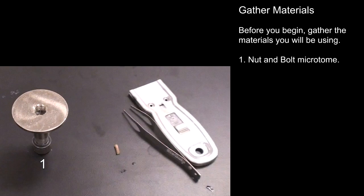The nut and bolt microtome, a 1 centimeter length of plant tissue, a set of tweezers, and a razor blade in its holder.